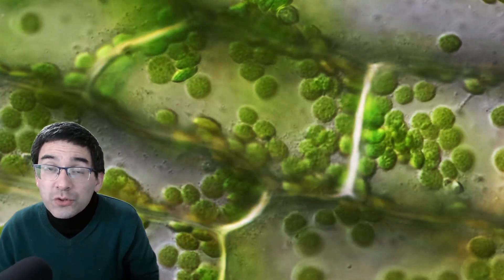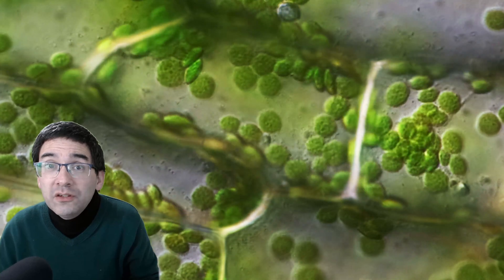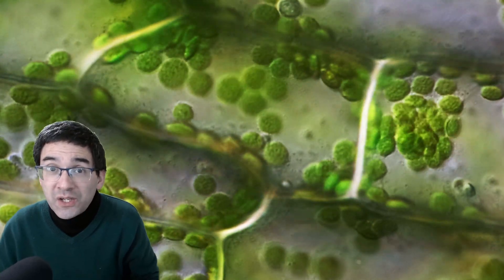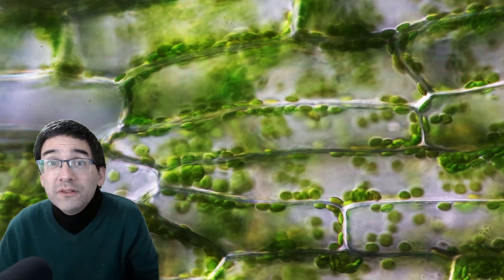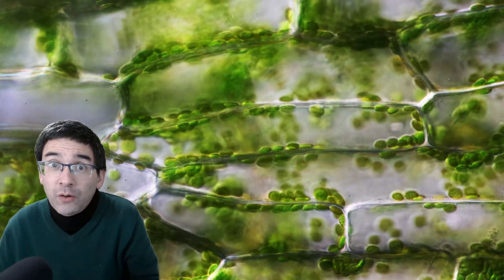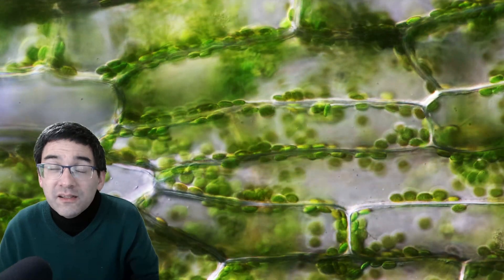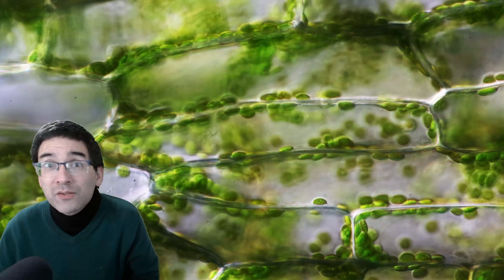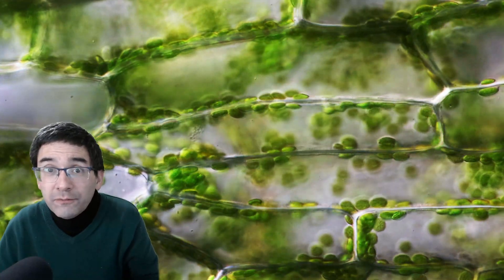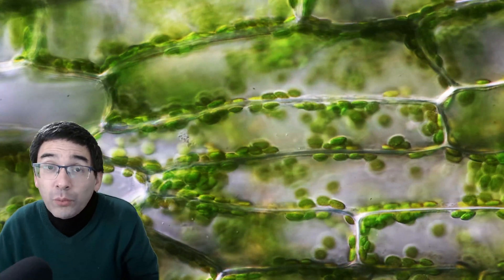When chloroplasts move around, they create shadows. This means different chloroplasts receive different amounts of light over time. These light intensity fluctuations are not very good because plants want a steady flow of light.